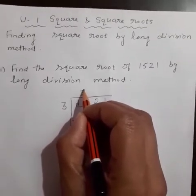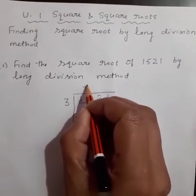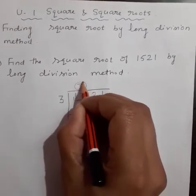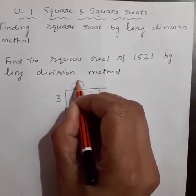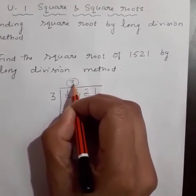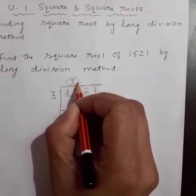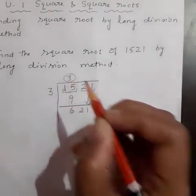Double the current quotient, that is 3. 3 × 2 = 6.